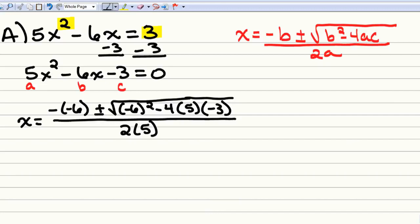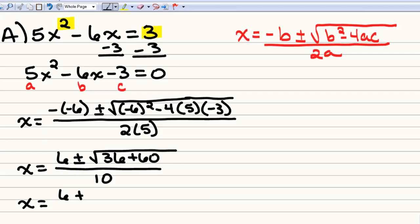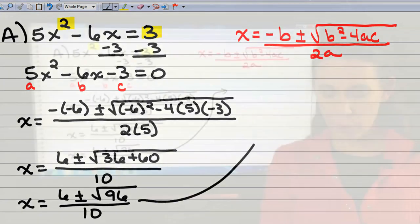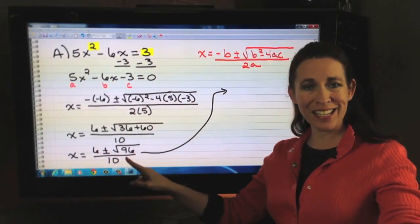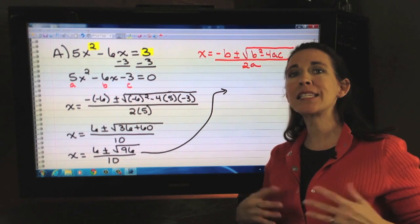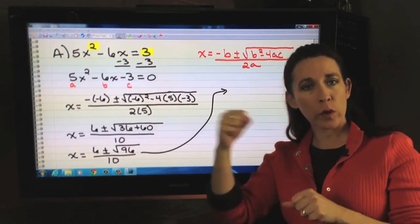So we've got the opposite of b, so the opposite of negative 6, plus or minus the square root of our b squared minus 4 times our a times our c, everything over 2 times our a. And now we can simplify. Opposite of negative 6 is a positive 6. Plus or minus the square root, negative 6 squared is 36. Then we have a negative 4 times 5 is a negative 20. Negative 20 times a negative 3 is a positive 60. So be careful with your signs. 2 times 5 gives us 10.